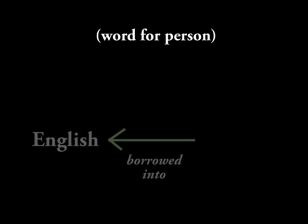We have the word 'person.' The word 'person' is a fairly basic word, yet it was actually borrowed — it's not a native Germanic word in English. Well, it's a native word now, but it was at some point borrowed into English.